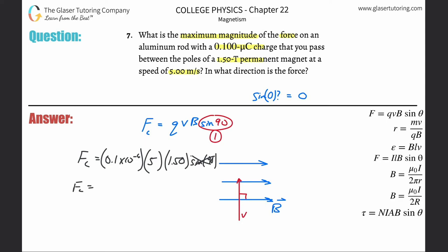So what do we get? 0.1 times 10 to the minus six, then multiply by five, multiply by 1.5. And it looks like we get a value of about 7.5 times 10 to the minus seventh. So 7.5, I guess three sig figs, times 10 to the minus seventh. And that will be in terms of Newtons because we're talking about force.